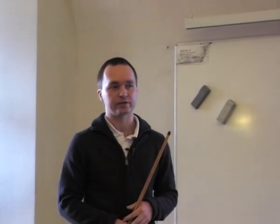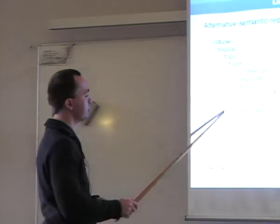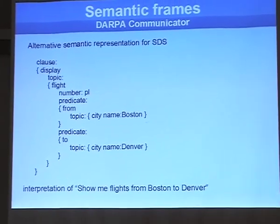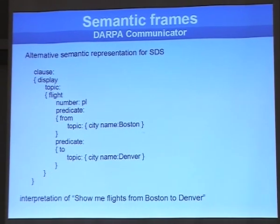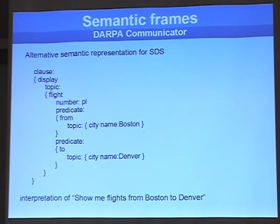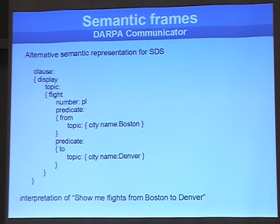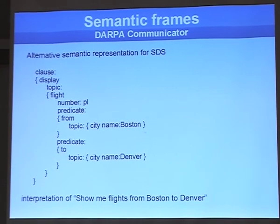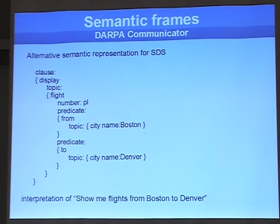There are many ways to interpret input utterances. One approach, based on the DARPA Communicator, uses semantic frames. For example, the sentence 'show me flights from Boston to Denver' is represented with nested semantic frames resembling context-free grammars, making the query quite complex. While that approach has a richer structure, incorporating the parsed input into dialogue state is difficult. Our previous flat approach is usually simpler.